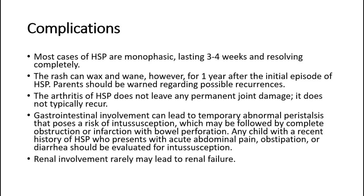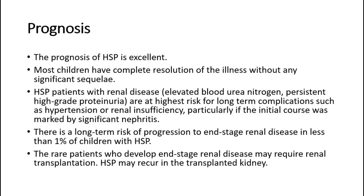Renal involvement rarely may lead to renal failure. The prognosis of HSP is excellent, and most children have complete resolution of the illness without any significant sequelae. HSP patients with renal disease, elevated blood urea nitrogen, or persistent high-grade proteinuria are at highest risk for long-term complications such as hypertension or renal insufficiency, particularly if the initial course was marked by significant nephritis. There is a long-term risk of progression to end-stage renal disease in less than 1% of children with HSP. The rare patients who develop end-stage renal disease may require renal transplantation, and HSP may recur in the transplanted kidney.